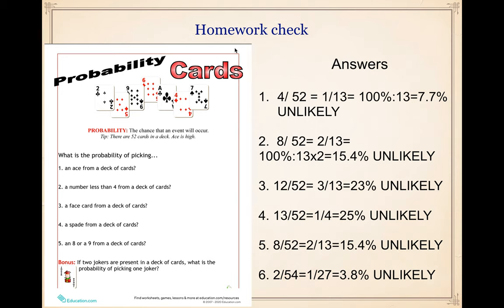Now let's check the homework first. We had six questions here about cards. First question: what is the probability of picking an ace from a deck of cards? An ace is the card with the number one — there are four ace cards. So four over fifty-two, or one over thirteen, and we divide one hundred by thirteen to get seven point seven percent probability, which is unlikely.